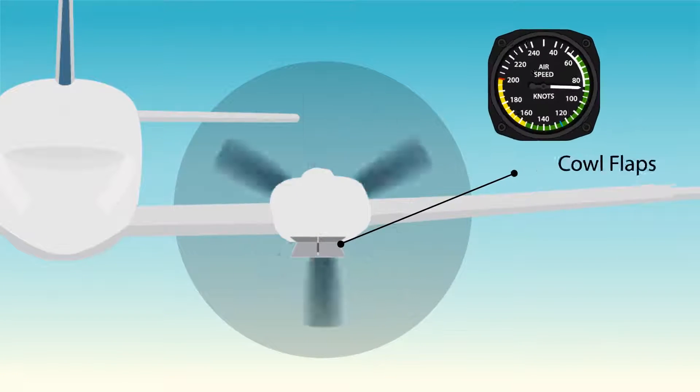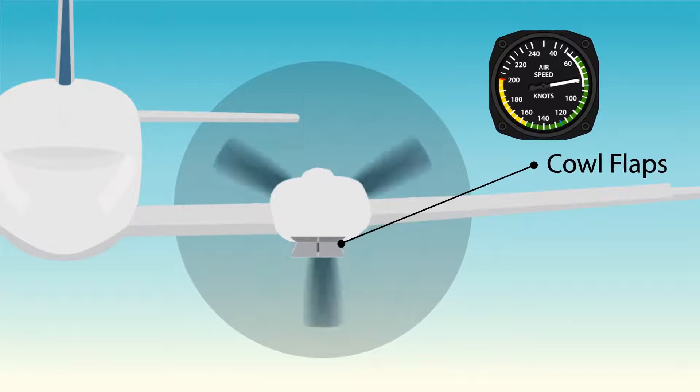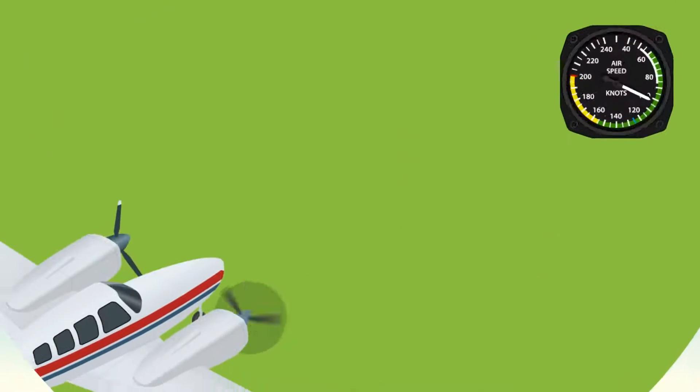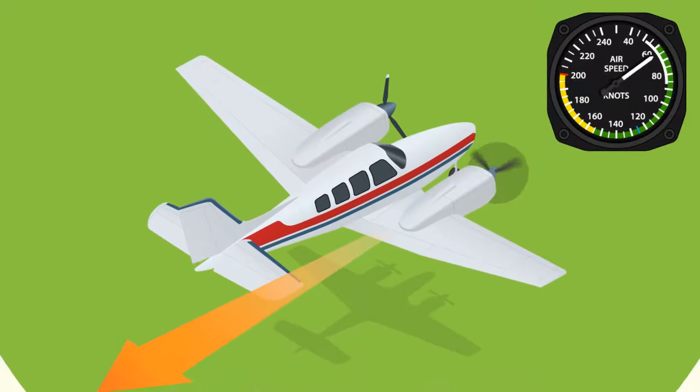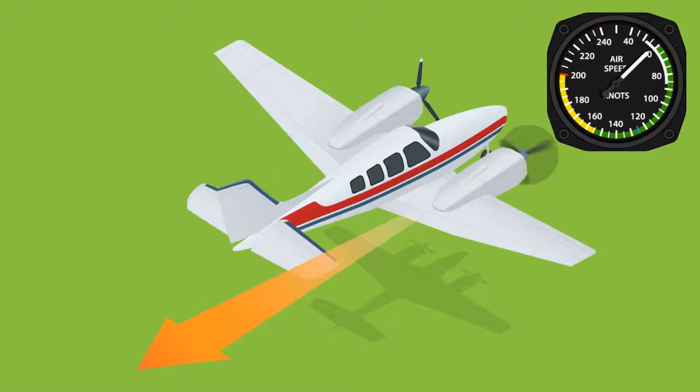Having the cowl flaps open would lower the minimum controllable airspeed, also known as the V-speed VMC. A lower VMC is good as it allows the pilot to maintain control at the slowest possible speed.